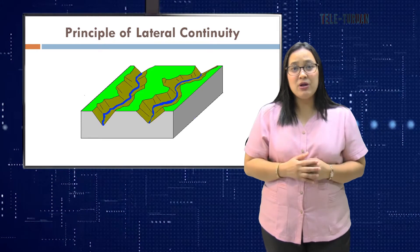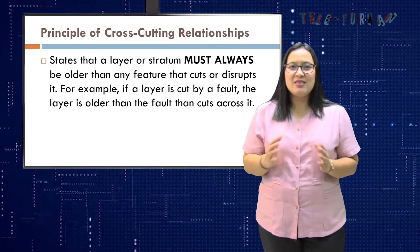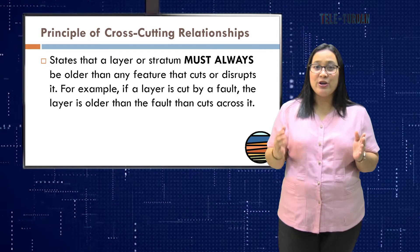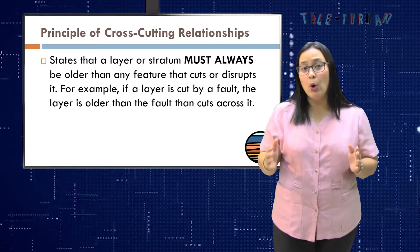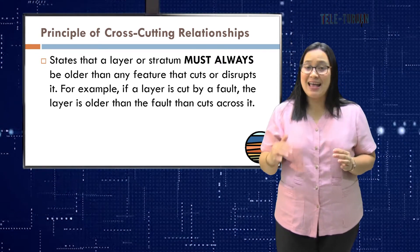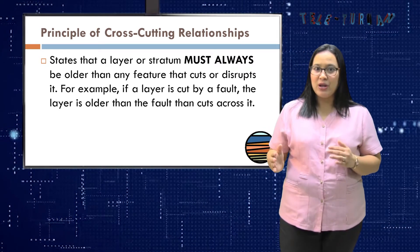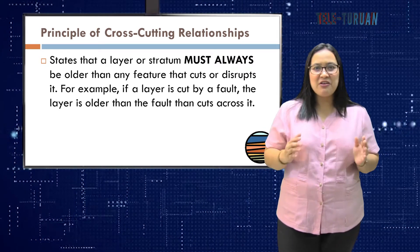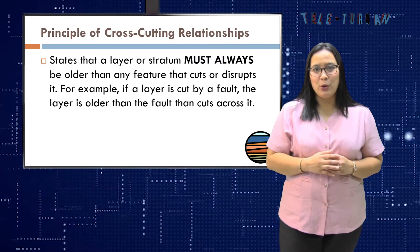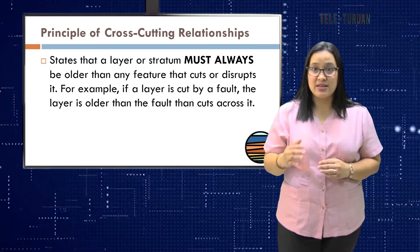The principle of cross-cutting relationships states that a layer or stratum must always be older than any feature that cuts or disrupts it. For example, if a layer is cut by a fault, the layer is older than the fault that cuts across it.